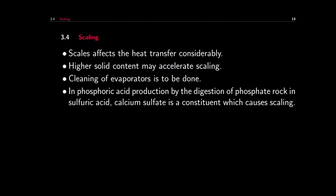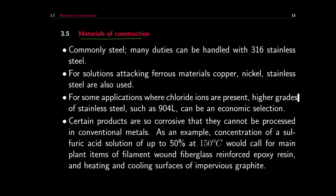Another factor is scaling — scale affects heat transfer considerably, and higher solid content can accelerate the scaling process, so cleaning of the evaporators is needed. For example, in phosphoric acid production by digestion of phosphate rock in sulfuric acid, calcium sulfate is a constituent which causes significant scaling. Material of construction is another factor requiring significant consideration. Commonly steel or 316 stainless steel can be used for many purposes. However, some feeds and products can be detrimental to ferrous materials — for these cases, copper or nickel are used. For applications where chloride ions are present, higher grades of stainless steel such as 904L can also be an economical selection.